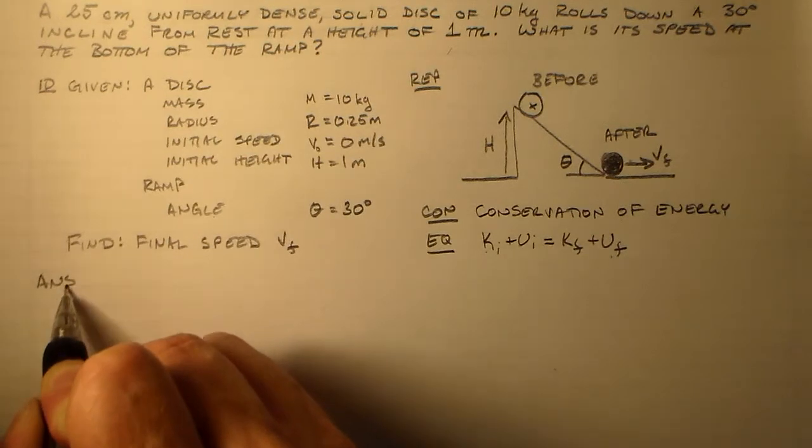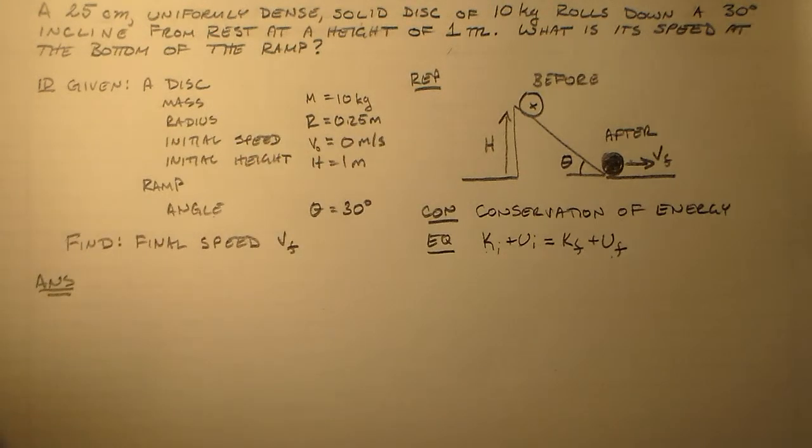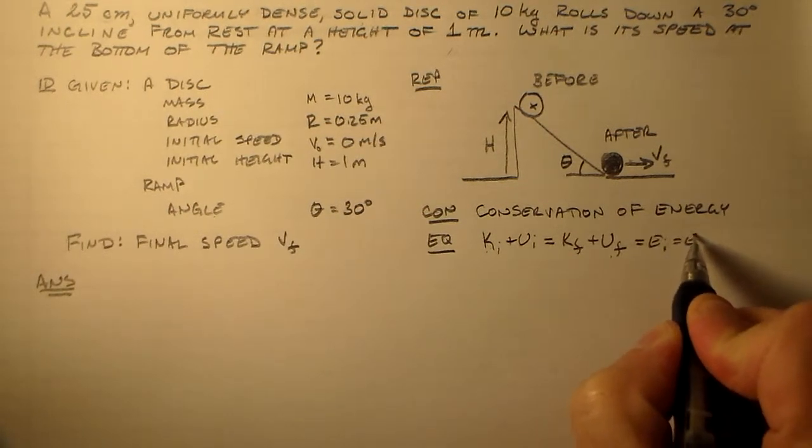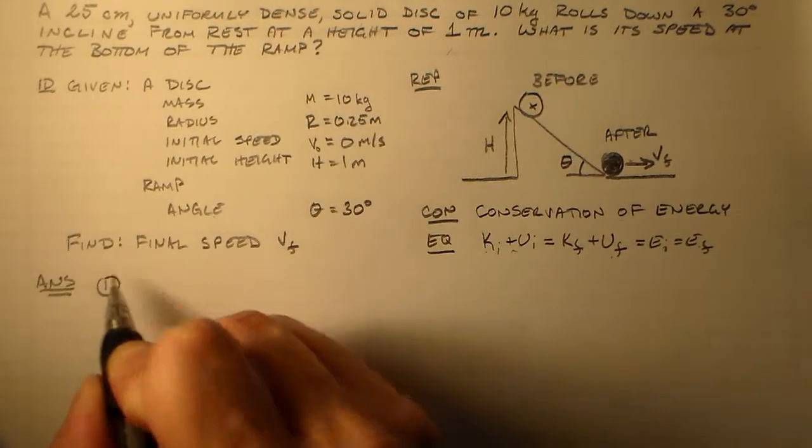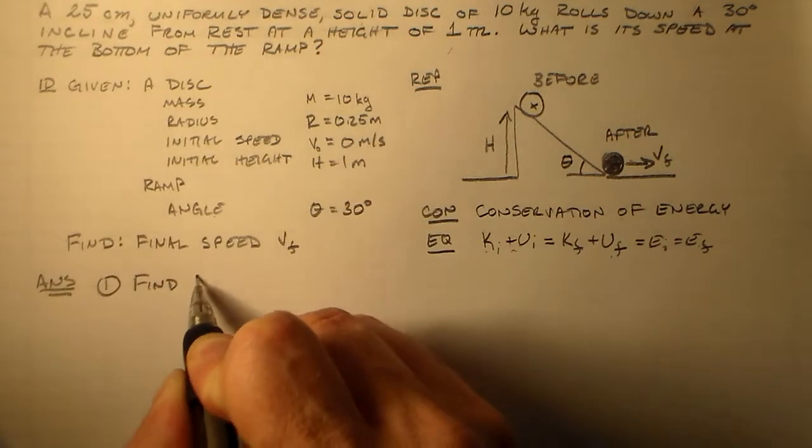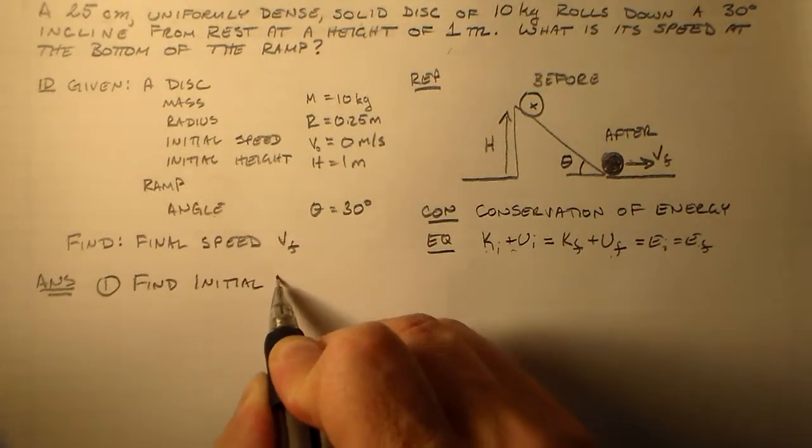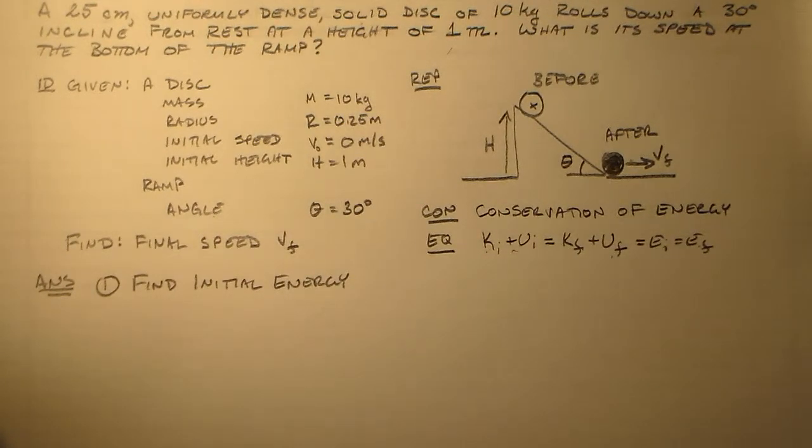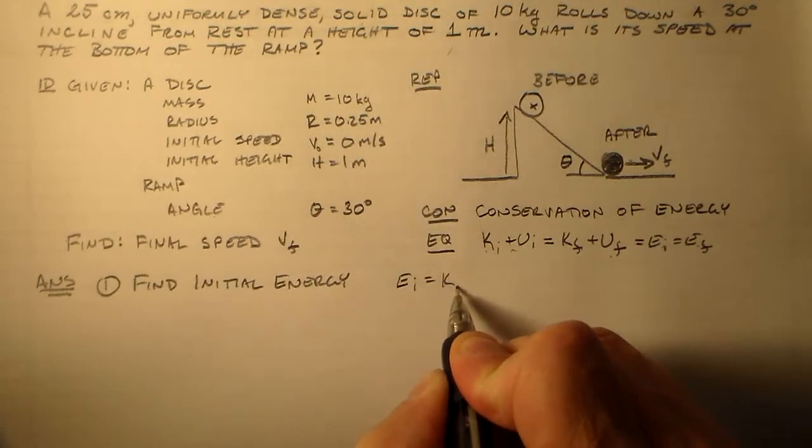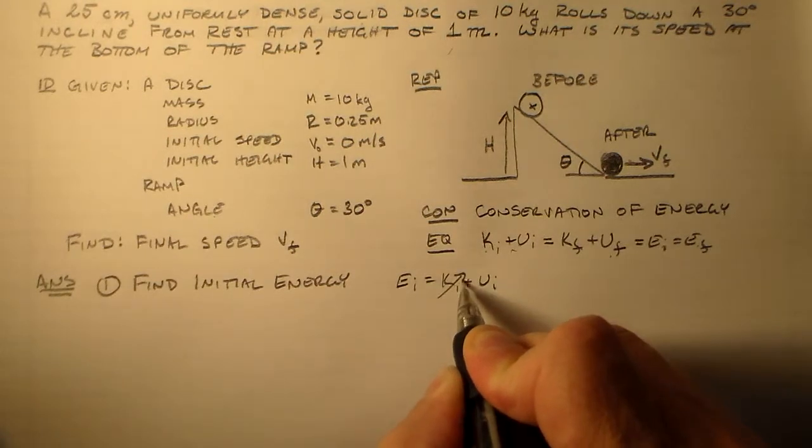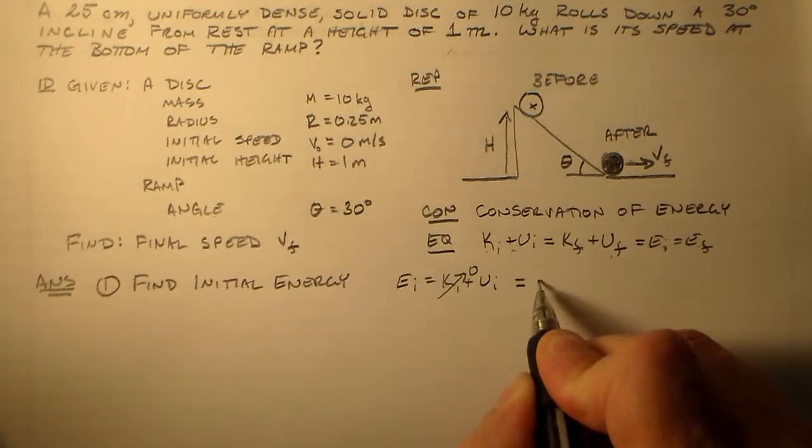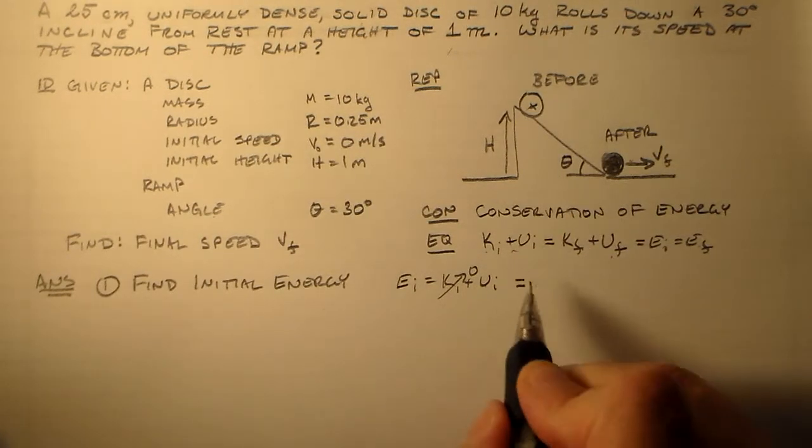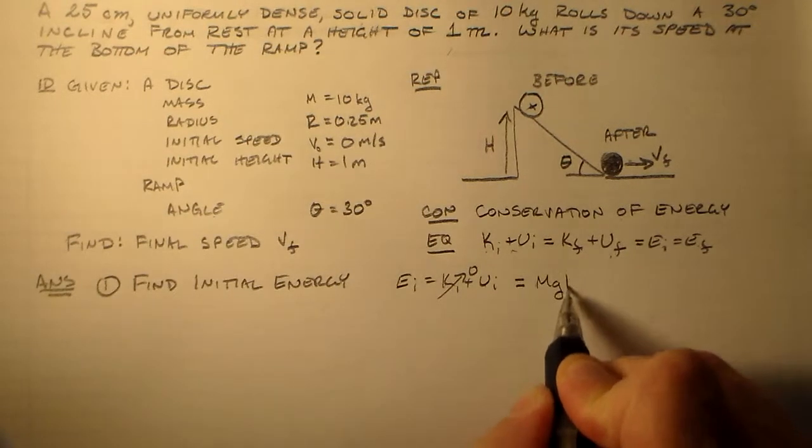So now we're ready for our answer. We've got EI is equal to EF. So we're going to have to find these two energies. So the first thing I want to do is find the initial energy. And that initial energy is going to be EI equals KI plus UI. But of course it's not moving initially. So it's just equal to UI. And the potential energy here is all gravitational. So that's just MGH.